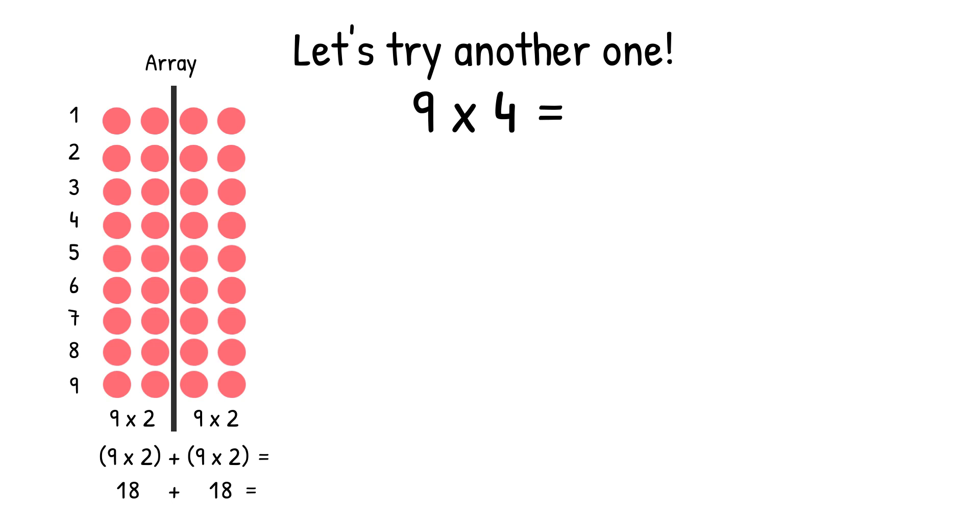Now, 18 plus 18 might not be easily done in your head, so I'm going to rewrite it on top of each other, 18 plus 18, and I'm going to use the partial sum strategy. So we're going to add the ones, 8 plus 8 equals 16, and then I'm going to add the 10s, 10 plus 10 equals 20, and then we add those sums together, 16 plus 20 equals 36. So 9 times 4 equals 36.